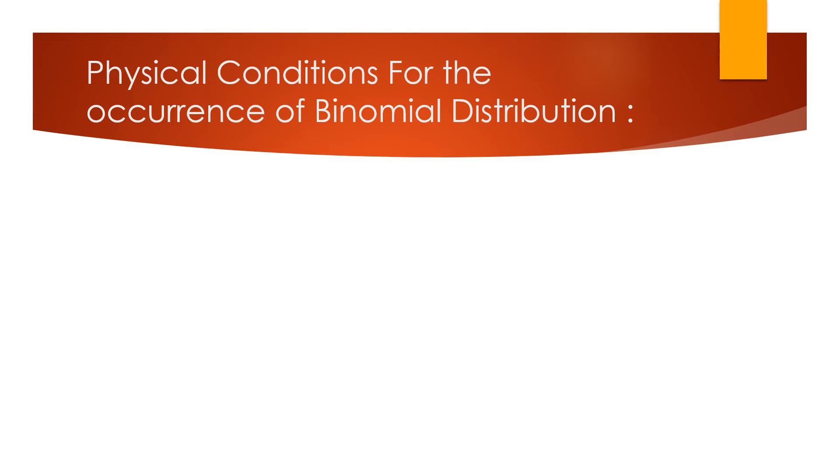Physical conditions for the occurrence of binomial distribution: First condition is the result of each trial or experiment is classified into one of two disjoint categories - success (p) and failure (q).